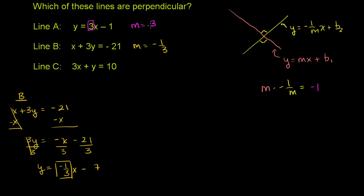We can already see that lines a and b are the negative inverses of each other. The inverse of 3 is 1/3, and line b's slope is the negative of that. Or, the inverse of -1/3 is -3, and line a's slope is the negative of that. So lines a and b are definitely perpendicular to each other.